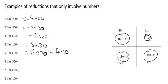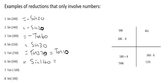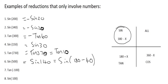For sin 500, we first subtract 360 degrees, giving sin of 140. Now we can start reducing from there. 140 falls in the second quadrant, so we rewrite it as 180 minus 40. That becomes sin of 40, and because sin is positive in that quadrant, the answer is positive sin 40.